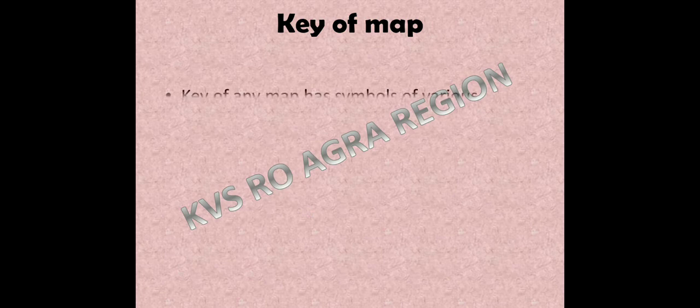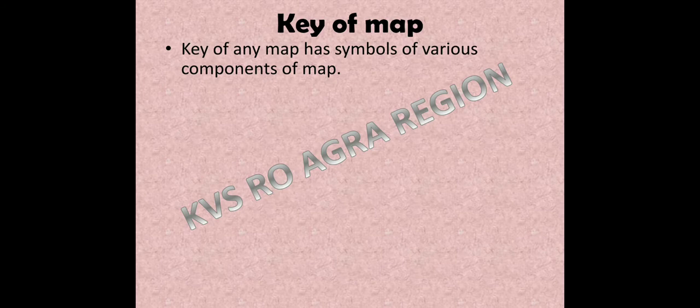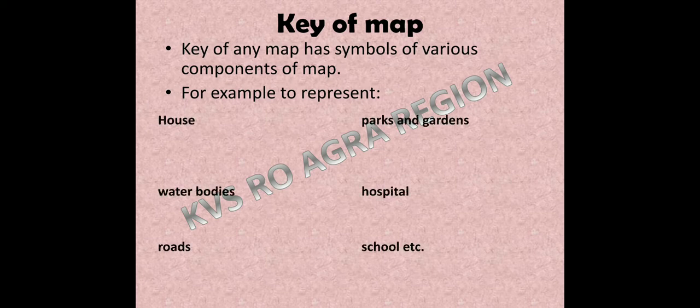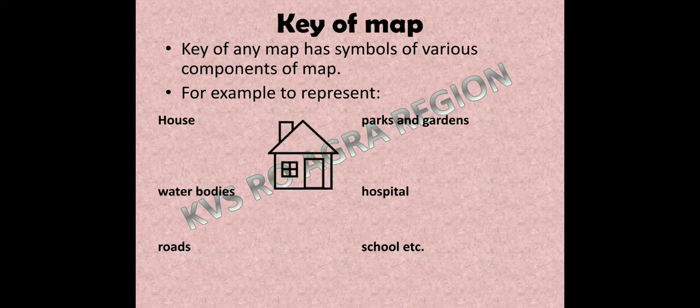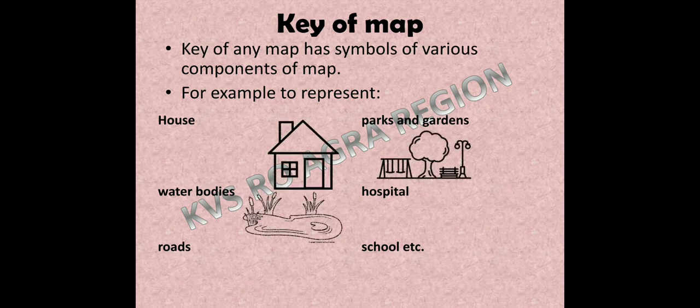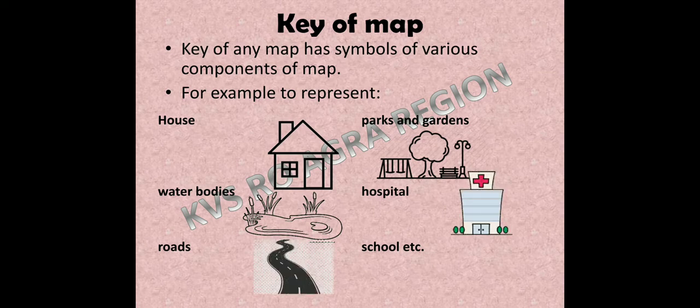One more important part of a map is the key of a map. The key of any map has symbols of various components. For example, if you have a map and want to represent houses, water bodies, roads, hospitals, schools, parks and gardens — instead of writing the spellings, we use symbols. These symbols which represent certain things on the map are called the key of the map.